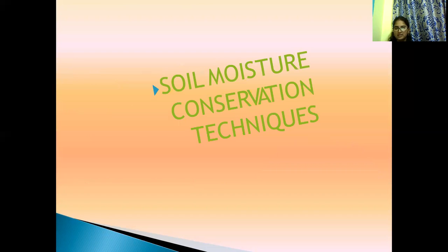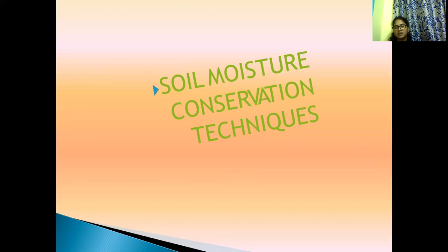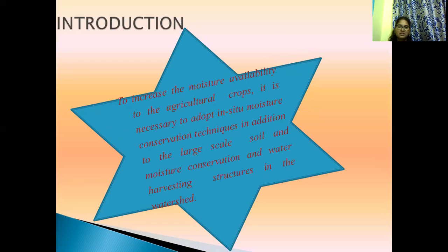Today's topic is soil moisture conservation techniques — how soil moisture conservation techniques work. Soils are conserved by covering the overall land with vegetation, where the root zone holds the soil and water, increasing soil moisture content. The introduction is to improve the moisture availability to agricultural crops. It is necessary to adopt in-situ moisture conservation techniques in addition to large-scale soil and moisture conservation and water harvesting structures in the watershed areas.